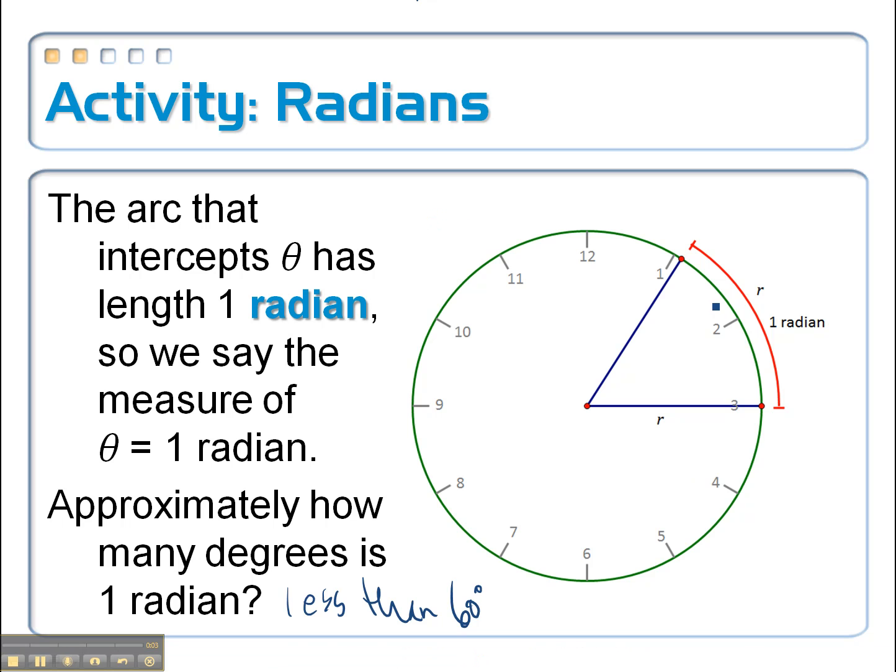Alright, picking up where we left off, we said that if you were to take the length of the radius of a circle, wrap it around the outside of that circle, that same exact length traces out an angle. I'm calling that angle theta, it's just a Greek letter, and that is the measure of an angle that we call one radian.